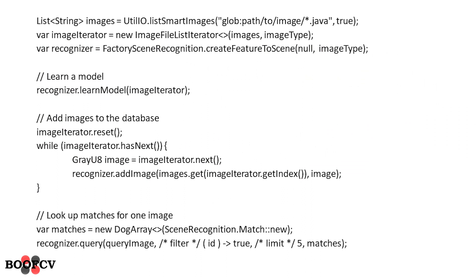That's all for the Android demo for right now. It's easy to install — just put it on your phone and play around with it to learn about scene recognition. What I'm showing now is how easy this is to code up using the high-level API. In just a few lines of code, I was able to train a new model, add all the images to the database, and then query to find the best-fit image. This gives you a sample of what it's like to work with BoofCV and scene recognition.